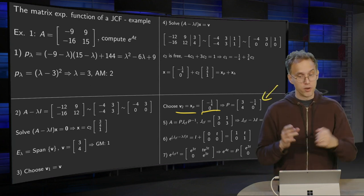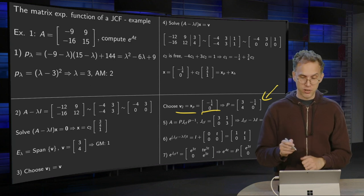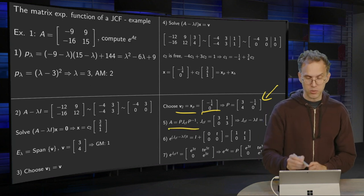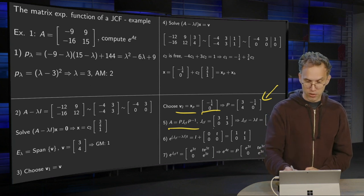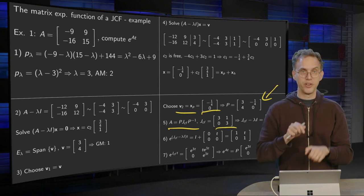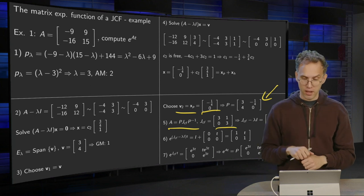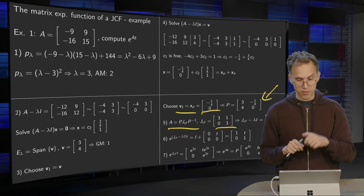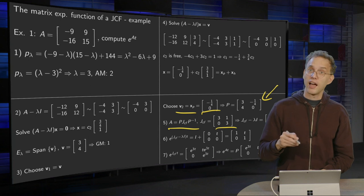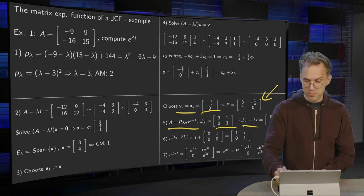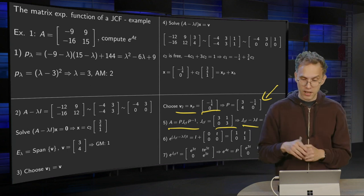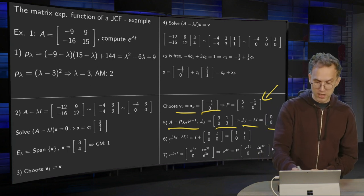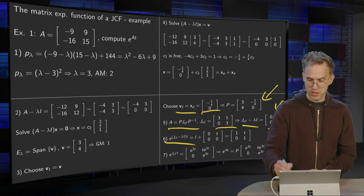So now we have done most of the hard work. So now we know that A is similar to P times JCF times P inverse, where the Jordan canonical form is given by the threes on the diagonal and the one on top, because we have a cycle of size 2. And we can easily compute JCF minus lambda I, gives us 0, 1, 0, 0.